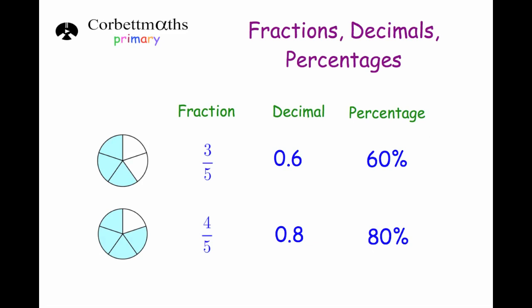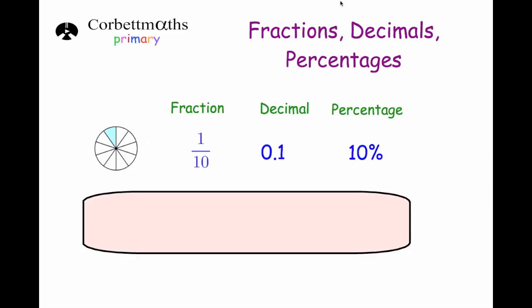So we've gone through halves, quarters, and fifths. Now we're going to go on to tenths. Here we've got one tenth — 10 sections and one is shaded in, representing one tenth. 1 divided by 10 is 0.1, and as a percentage, 100% divided by 10 is 10%. So each section is 10% or 0.1, and we can use that to work out all of them.